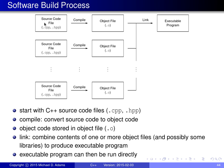Once we have our source code files, for each one we compile it. The compilation process takes a source code file and produces a corresponding object file containing object code — a collection of machine instructions, the data that goes with those instructions, and other information used for linking and debugging. On Unix-based systems, the .o extension is used for object files. The linking process then takes one or more object files, possibly combined with object code from libraries, and produces the final executable program.